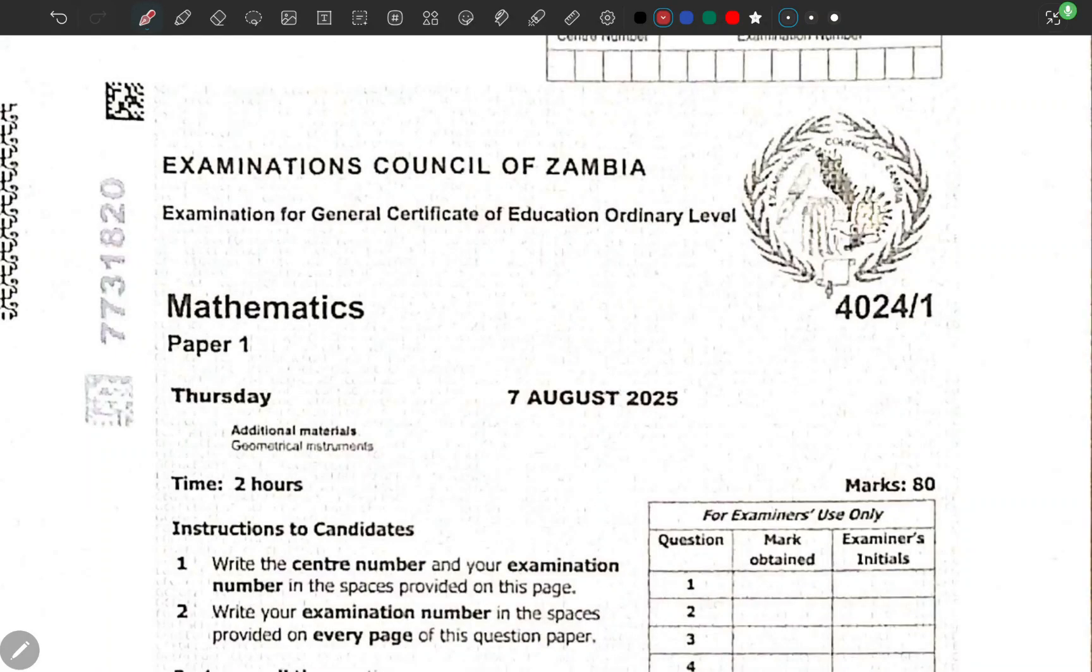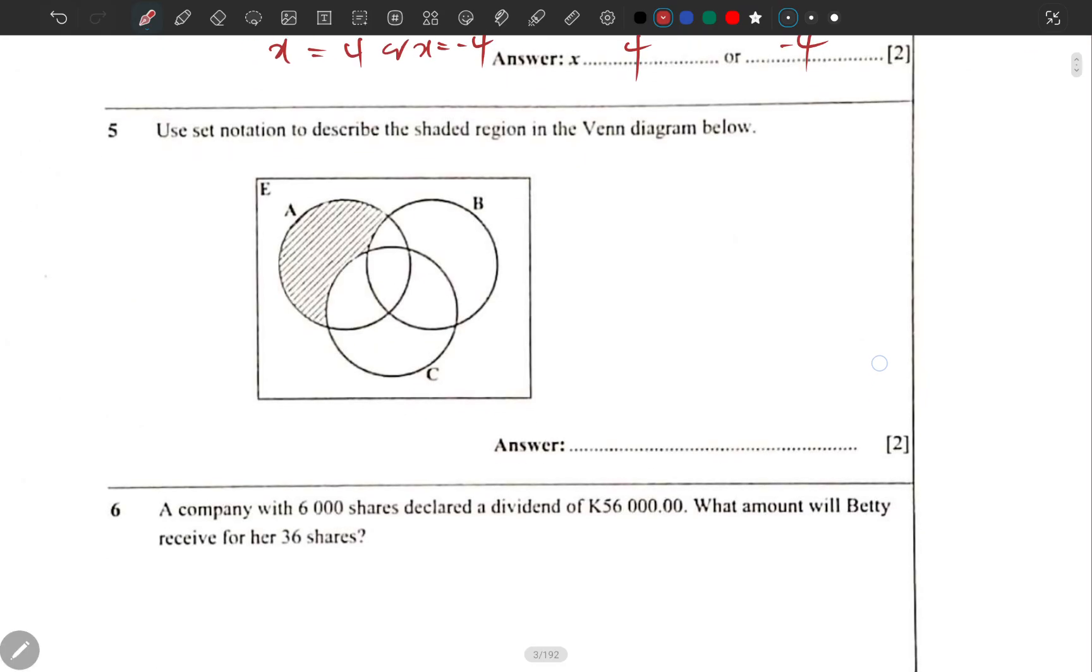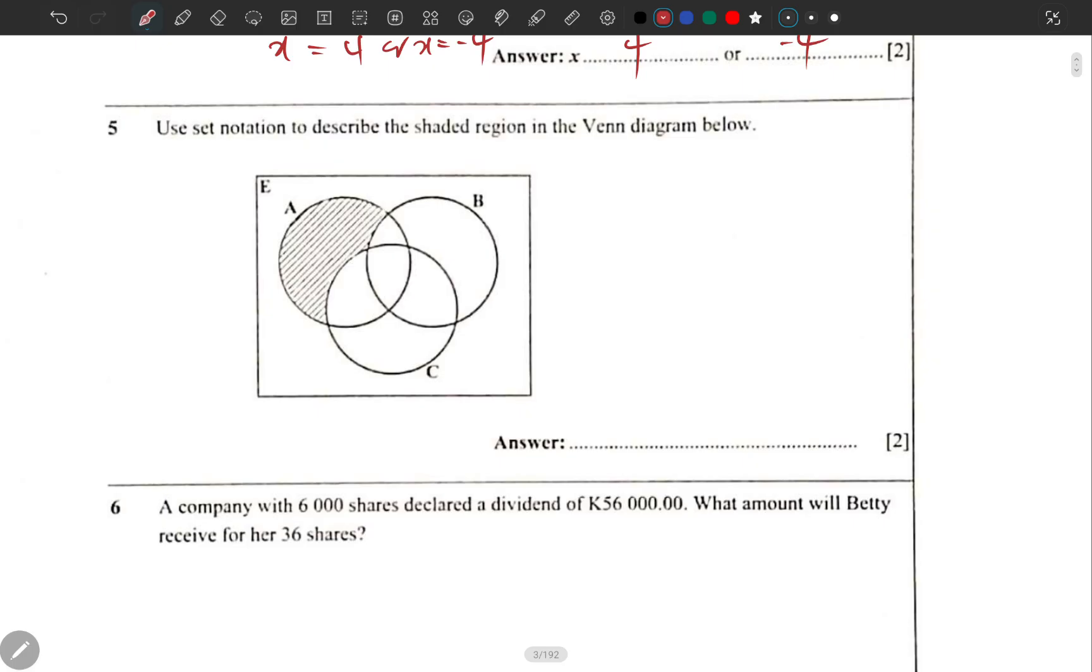Okay, so let us continue with the questions where we ended. We ended on question number four, so let's see where we are going to go now. We are on question number five, which is: use set notation to describe the shaded region in the Venn diagram below.